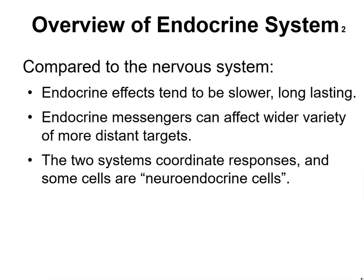Compared to the nervous system, endocrine effects tend to be a lot slower but longer lasting. Endocrine messengers can affect a wide variety of more distant targets, whereas the nervous system is very specific. The two systems coordinate responses, and some cells are neuroendocrine cells, so they both have to work with each other.